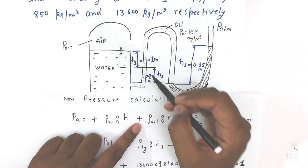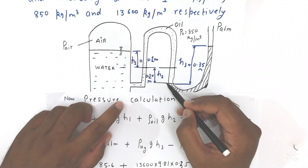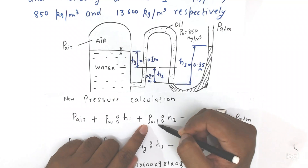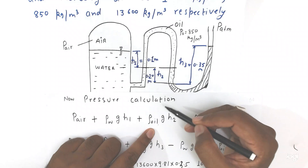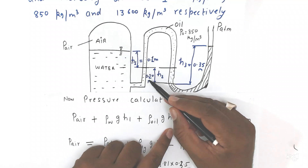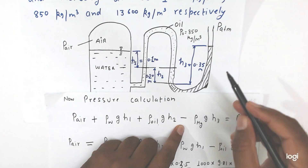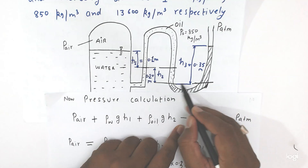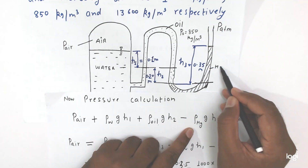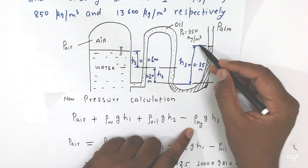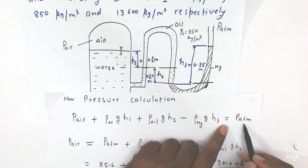The pressure up to this point — from here we are coming down again, so plus rho_oil into g into h2, because in this limb oil is there. So rho_oil into g into h2, where h2 = 0.2 meter. Then minus, because from here we are going upside — minus rho_hg (density of mercury) into g into h3, where h3 = 0.35 meter. This whole set of pressure equals atmospheric pressure, P_atm.